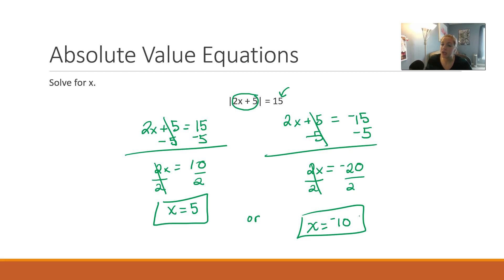You could also check your second value, negative 10. 2 times negative 10 is negative 20, plus 5 gives you negative 15. Absolute value of negative 15 is positive 15. Check mark. So both of these solutions work. Great, we double checked that we did it correctly.